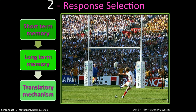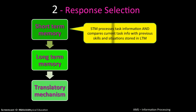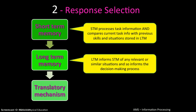Part two is response selection, involving short-term memory, long-term memory, and translatory mechanisms. Short-term memory is the processing memory where you process information coming in from the stimulus identification stage — making the comparison between your current situation and stored experiences. Long-term memory informs short-term memory: from a store of previous experiences, you recall whether you have been in this situation before, and what you did and whether it worked.